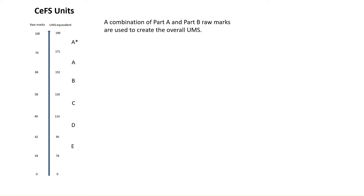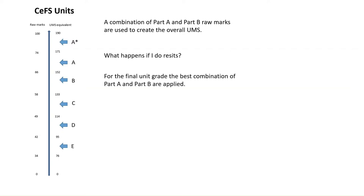Bear in mind that these grade boundaries can change. Anywhere between the grade boundaries — 171 to 190 — you'll get an A star. 152 to 171, you'll get an A, etc. You might be thinking: what happens if I do resits? Well, the good news is that for the final unit grade, the best combination of your Part A and Part B are applied. So even if you do worse in the resit, they will keep your best performance. Of course, if you do better in the resit, they'll keep the second of your two sittings.